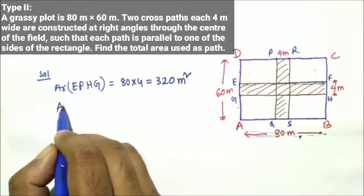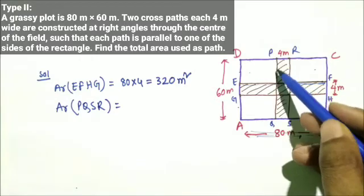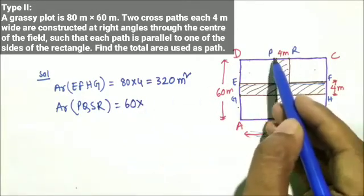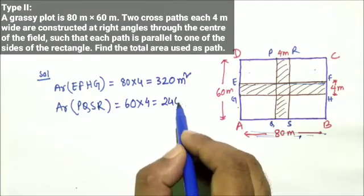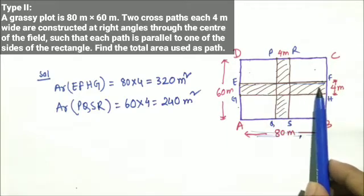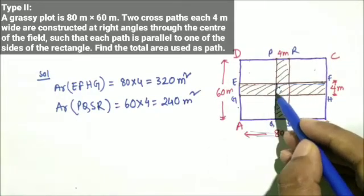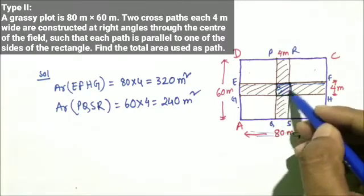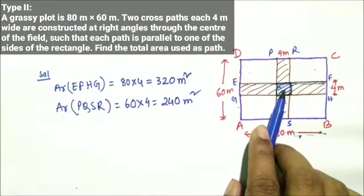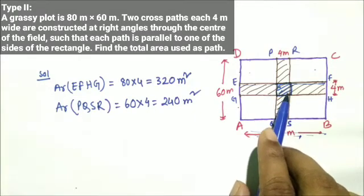Now let us find the area of rectangle PQSR, the vertical path. Its length equals the breadth of the plot: 60 meters. Its width is 4 meters. So area of PQSR = 60 × 4 = 240 square meters. However, notice that when we add both rectangles, the intersection square IJKL is counted twice.